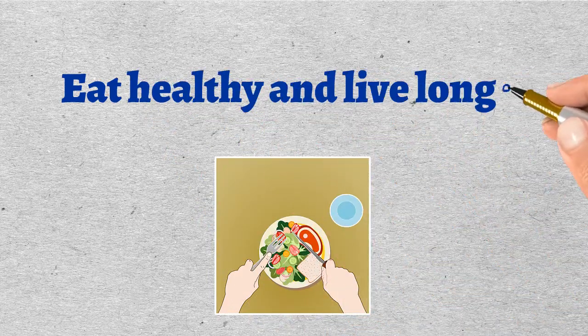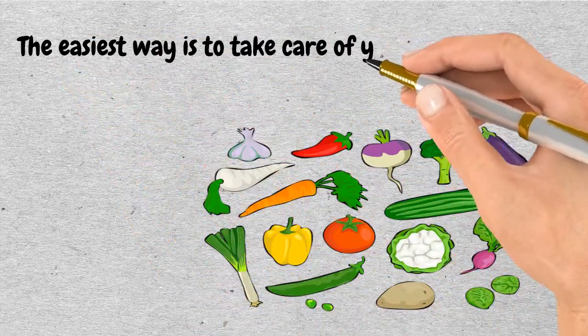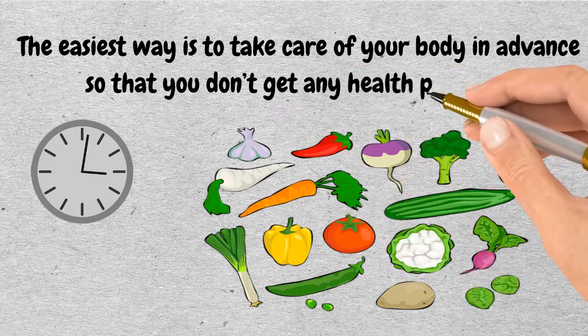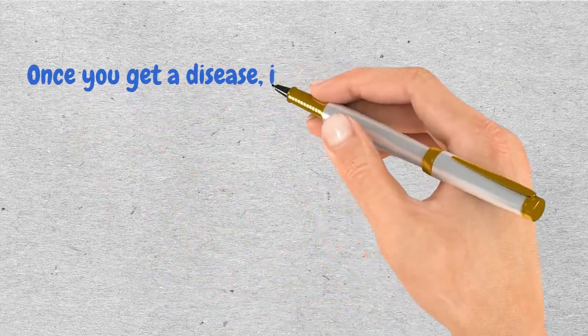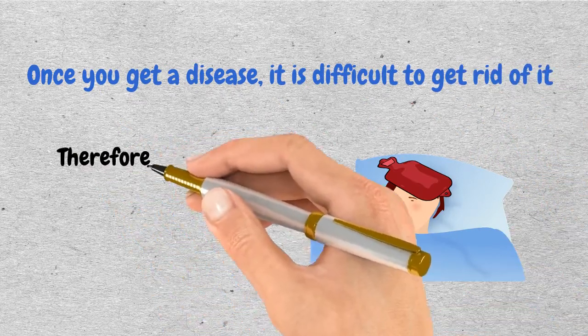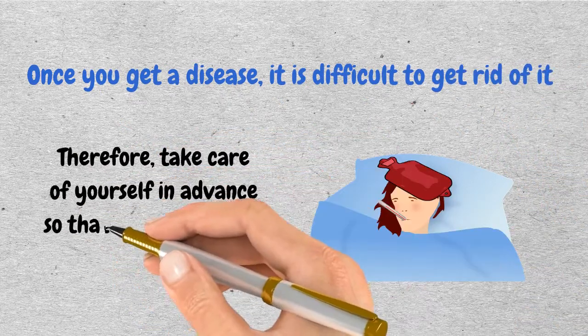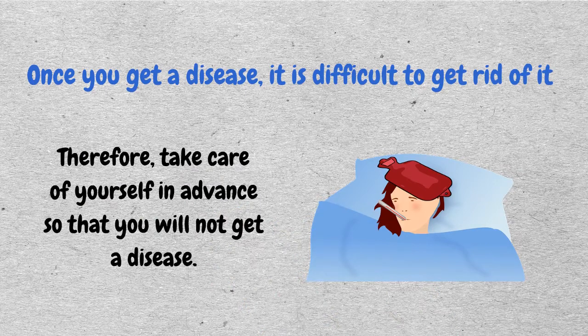Eat healthy and live longer. Sounds cliche? The easiest way is to take care of your body in advance so that you don't get any health problems. This method is the best. Once you get a disease, it is difficult to get rid of it. Therefore, take care of yourself in advance so that you will not get a disease.